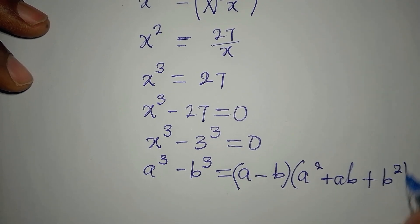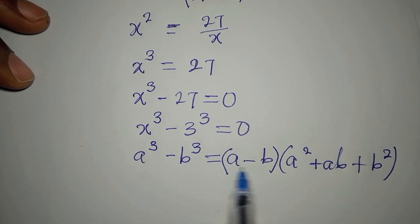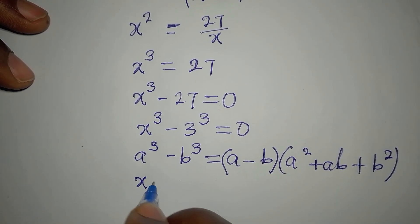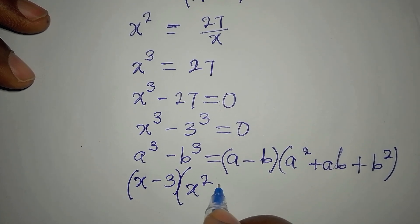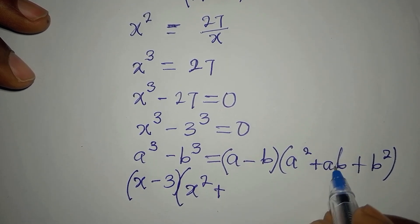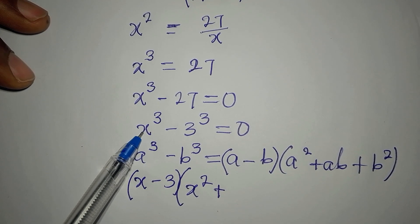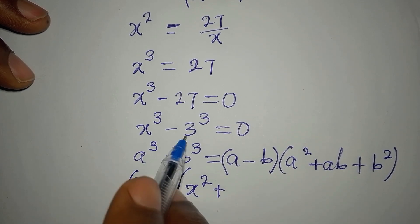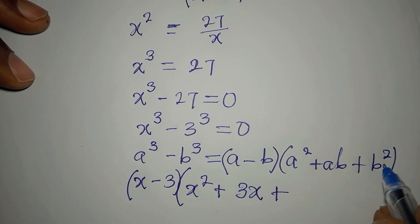Applying that formula here, the (a minus b) factor becomes (x minus 3). Then a squared gives x squared, and ab gives x times 3, which is 3x.